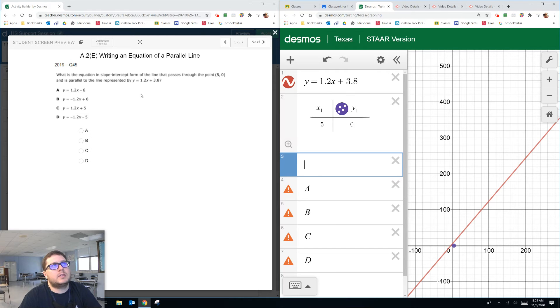One of the ways I teach it with my kids is parallel means the slope is the same. So what we can do is we can go ahead and eliminate answer choices B and D because the slopes are wrong.